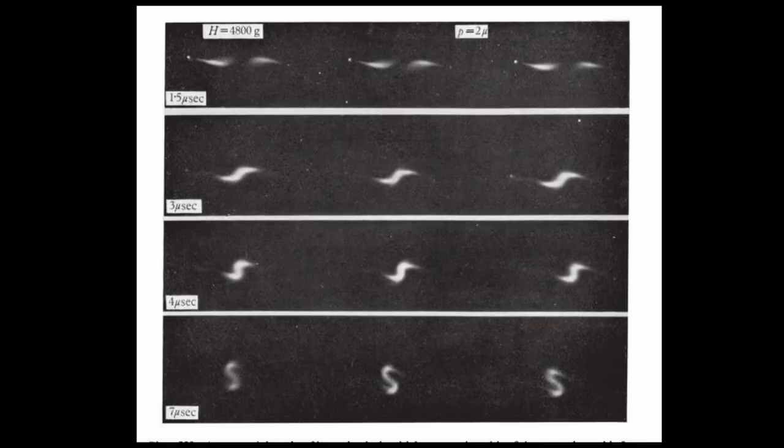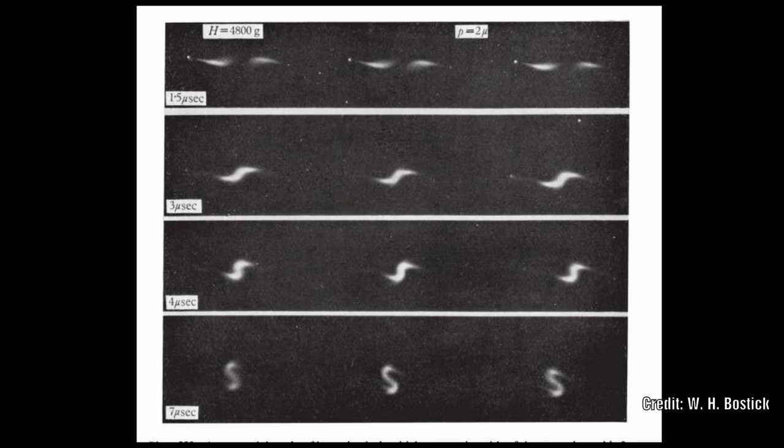He experimented with the plasmoids and discovered that he was able to recreate several different types of galaxy formation. By firing two plasmoids at each other across a magnetic field, the leading edges seemed to connect and cause the rest to spiral around it. As he increased the pressure in the chamber, the plasmoids started to form a helix shape.